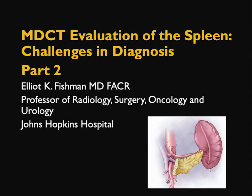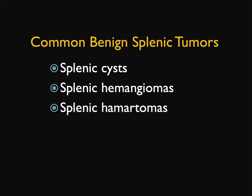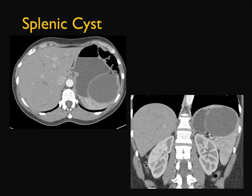Hi, this is Elliot Fishman, and welcome back to part two of the challenges and diagnosis of the spleen. We left off at benign splenic tumors. When you think about it, most splenic tumors that we do see are benign — cysts, hemangiomas, hematomas. Let me just show you some because they really do have a very typical appearance.